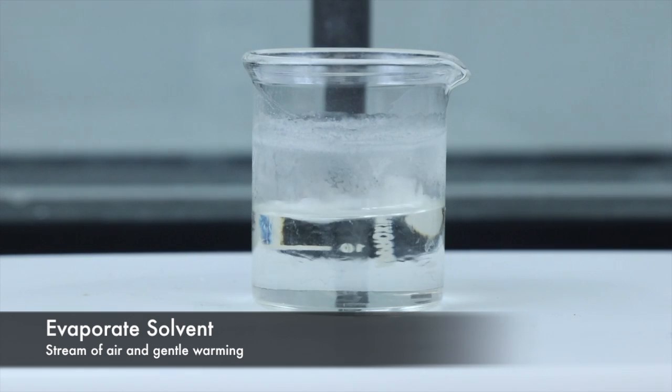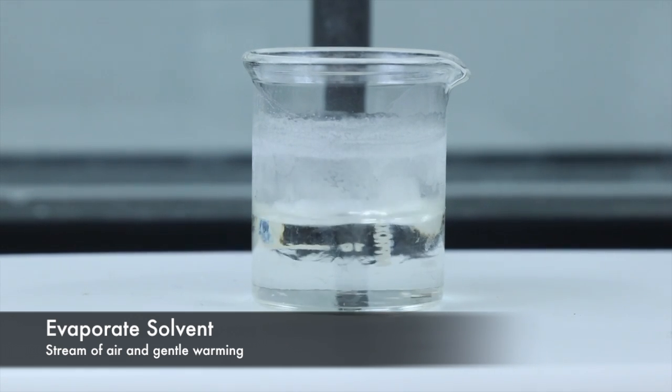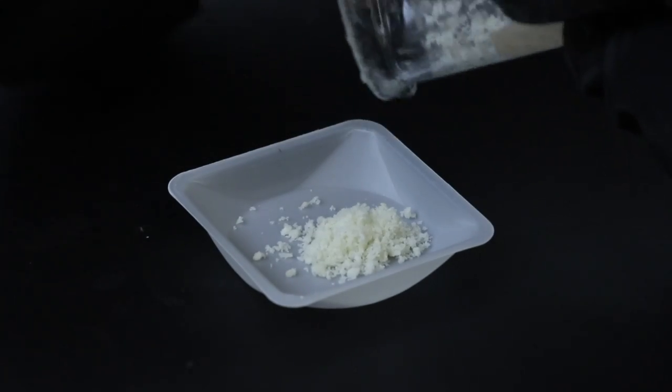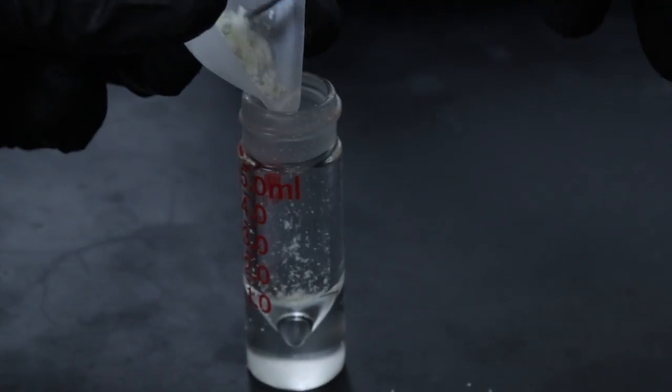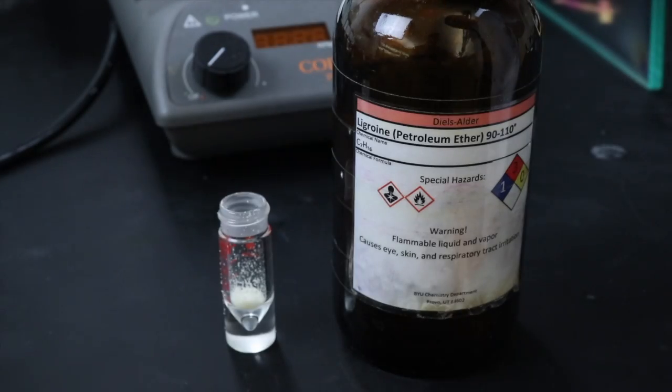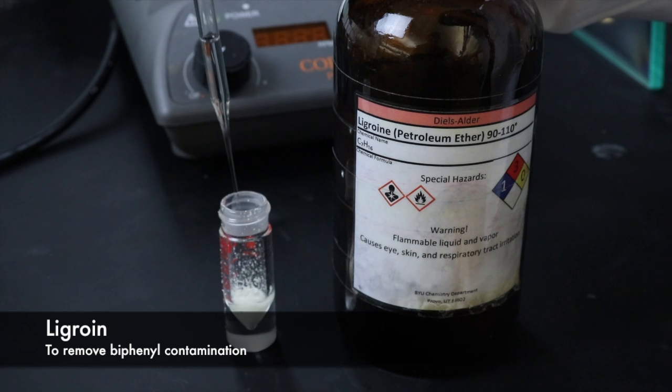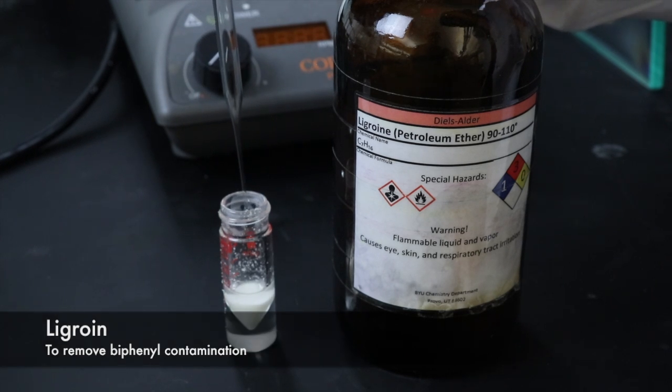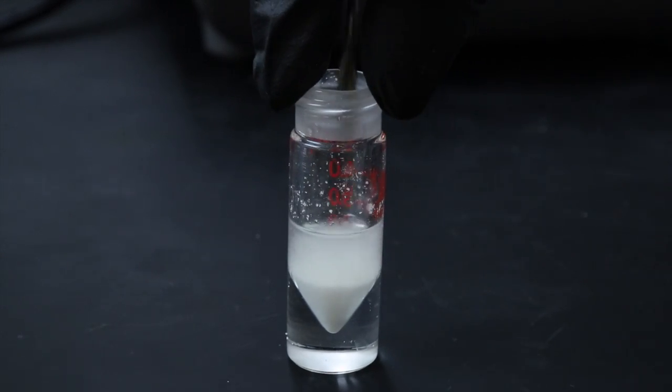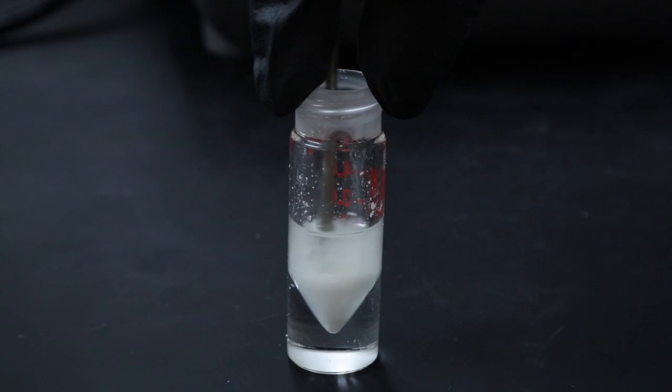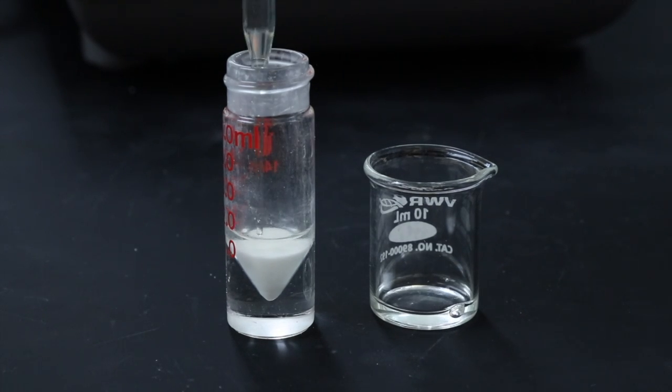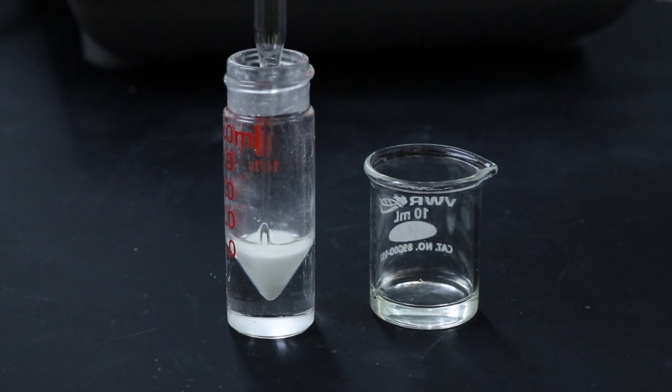I'll evaporate the solvent using a stream of air and some gentle warming, and then begin moving the crude product over to a conical vial where I'll be adding some legroine to dissolve the biphenyl contamination. I'll rinse it twice with about 2 milliliters of legroine each time, making sure to break up the solid really well in order to expose all of the biphenyl to the legroine. Then, I can draw off the solution from the product and repeat the process a second time.